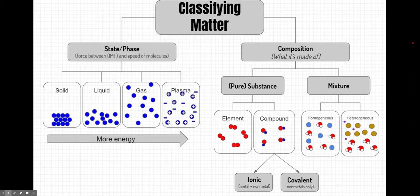So going back to our classifying matter flow chart, let's go ahead and add our different phases and states to our flow chart: solid, liquid, gas, and plasma, as well as draw some micro level particle models. I also like to point out that we increase the energy going from solid to plasma.